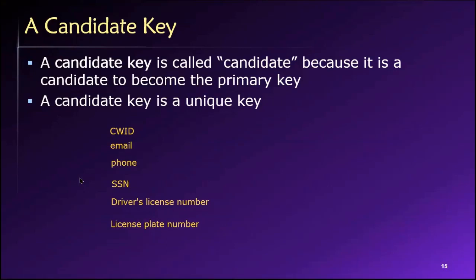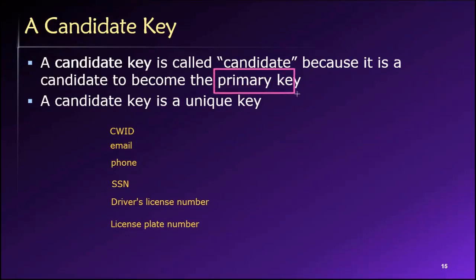So let's say we have this set of candidate keys, each of which potentially could be used to uniquely identify every individual at a university. These are our candidate keys, and what we need to do is choose one of them to serve as the primary key — one that we will use throughout our entire database system and all the apps that rely on it.